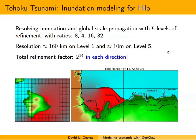We were doing inundation modeling for Hilo. The ones I'm showing might have been for an exaggerated fault model—so there might be larger inundation shown than was actually seen for the March tsunami. We use five levels of refinement with these ratios: level one to two refines by 8 in each direction, two to three by 4, then 16 and 32 and so on. These numbers are chosen based on getting to the desired resolution at the highest level, and are tied to the bathymetry data available.